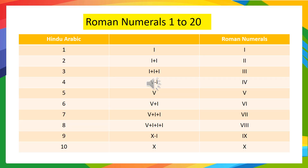Roman numerals 1 to 20. 1 is written as I. 2 means 1 plus 1, so we write it as II. 3 means 1 plus 1 plus 1, so we write it as III. 4 is written as IV — here you can observe rule 3. I means 1, V means 5, and since 1 is smaller than 5, we do the subtraction: 5 minus 1 is 4.